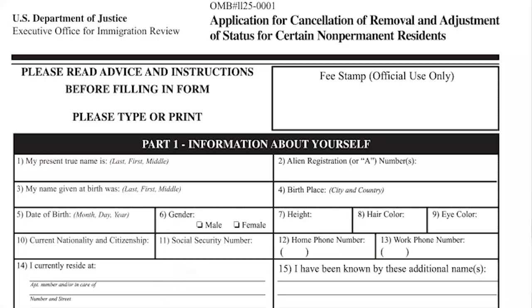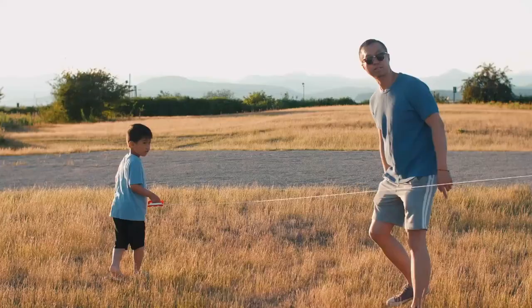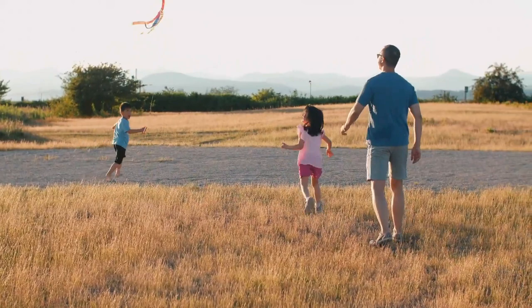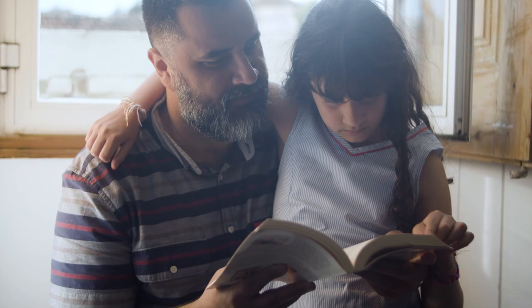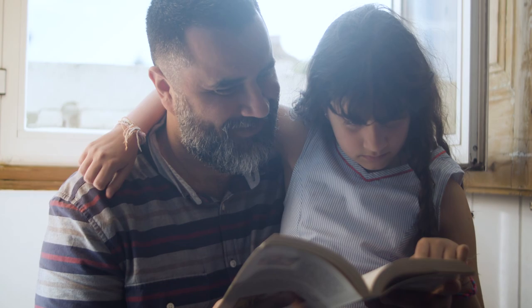One of the types of applications that you can submit is what's called a cancellation of removal application. Cancellation of removal applications are for individuals who have had a 10-year uninterrupted presence in the United States, who have good moral character, who don't have any disqualifying criminal convictions, and who have qualifying relatives in the United States — often U.S. citizen children, spouses, or parents — who would experience extreme or unusual hardship if a person were to be removed from this country.